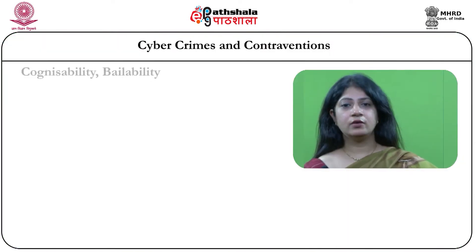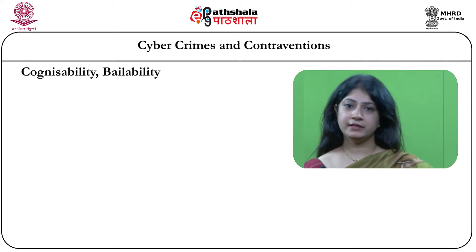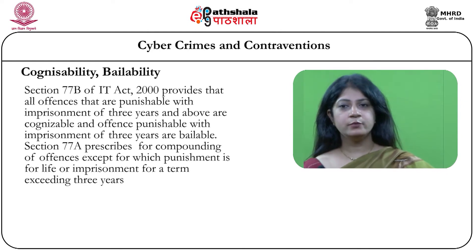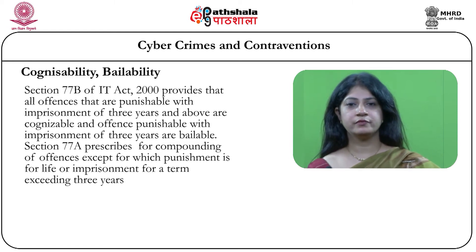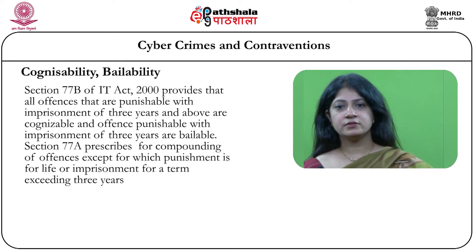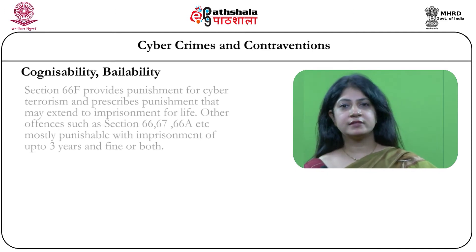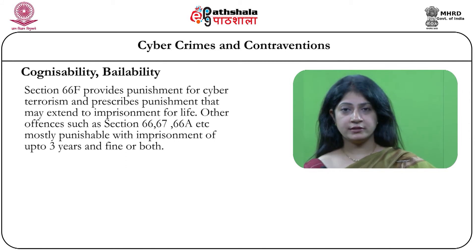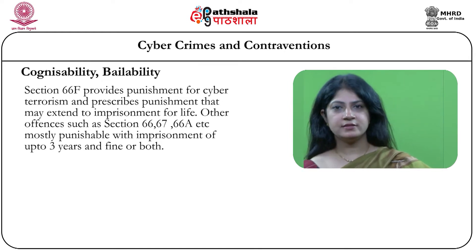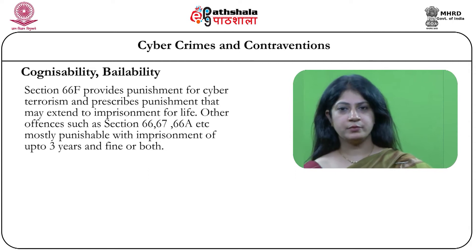This takes us to the question of cognizability and bailability of these offenses. When we look at cognizability and bailability, we have the CrPC to deal with it, but there is a special section — section 77B of the IT act — which provides that all offenses punishable with imprisonment of 3 years and above are cognizable, and all those punishable with up to 3 years are bailable. So offenses like 67A for sexually explicit content or 66F for cyber terrorism are non-bailable, having punishment of more than 3 years.